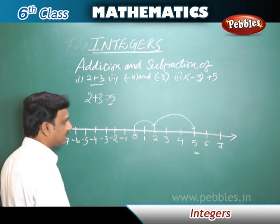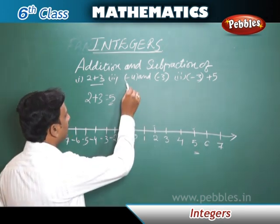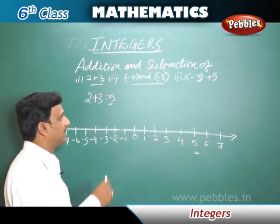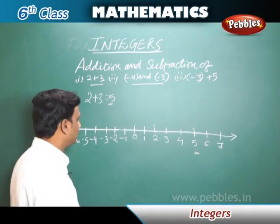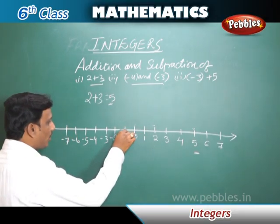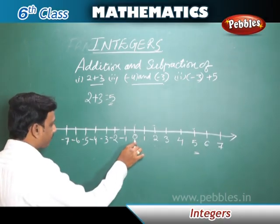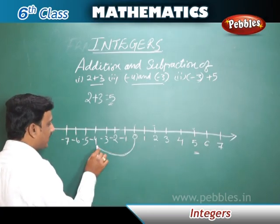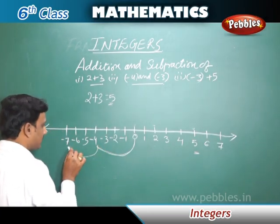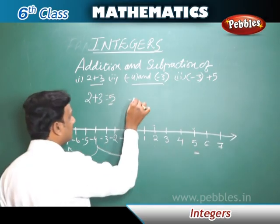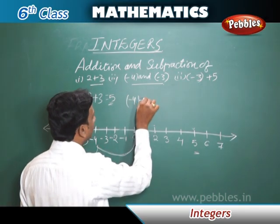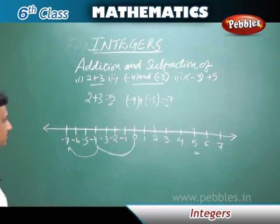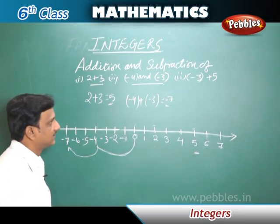Now let us see the next example — the addition of two negative numbers: minus four plus minus three. On the number line, from zero, we move to the left side. First, four positions to minus four, then three more positions to the left. We reach minus seven. So, minus four plus minus three equals minus seven.